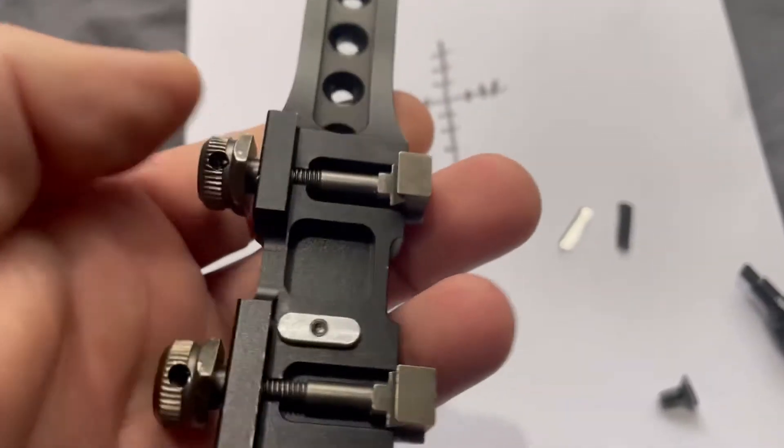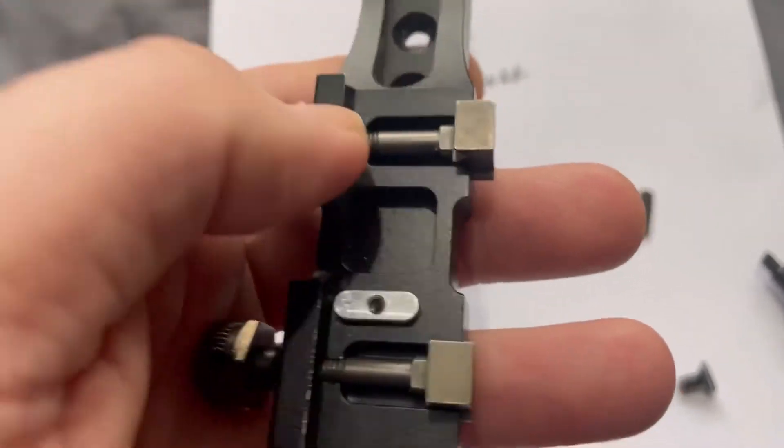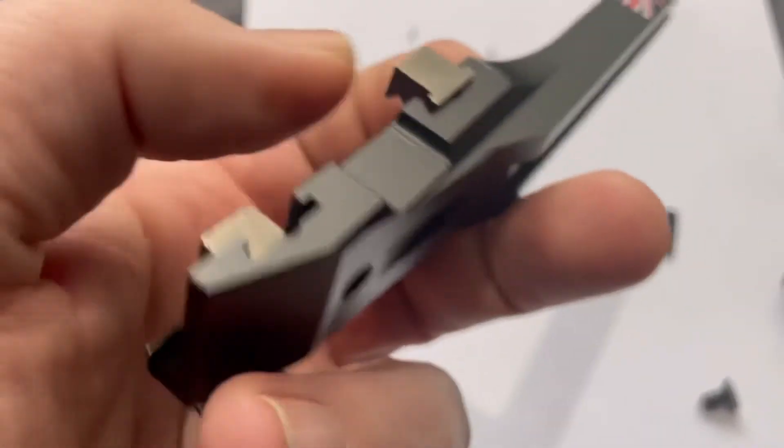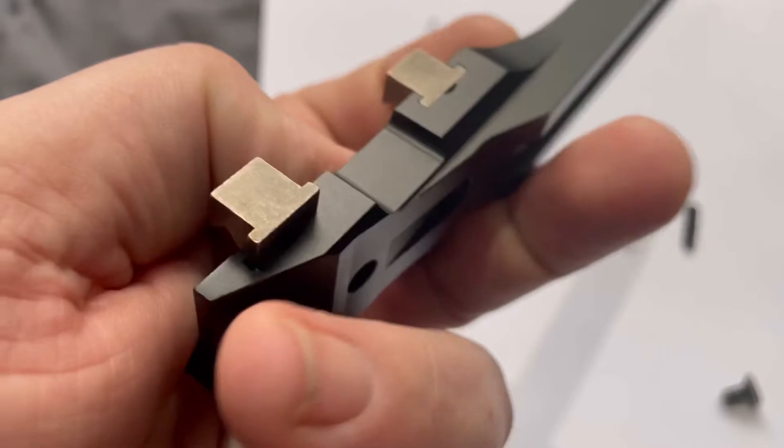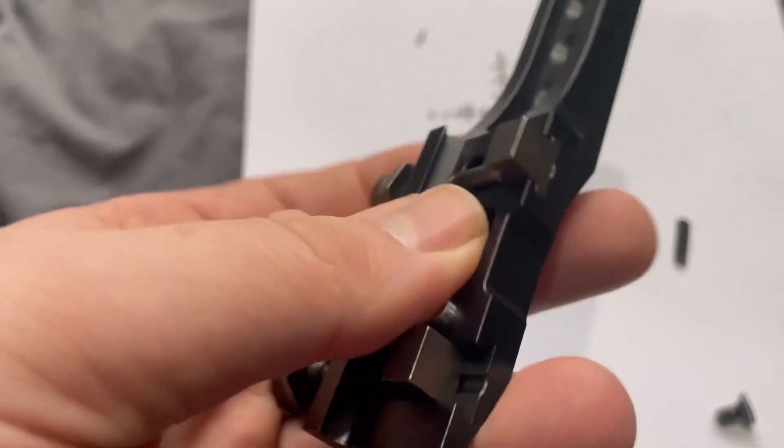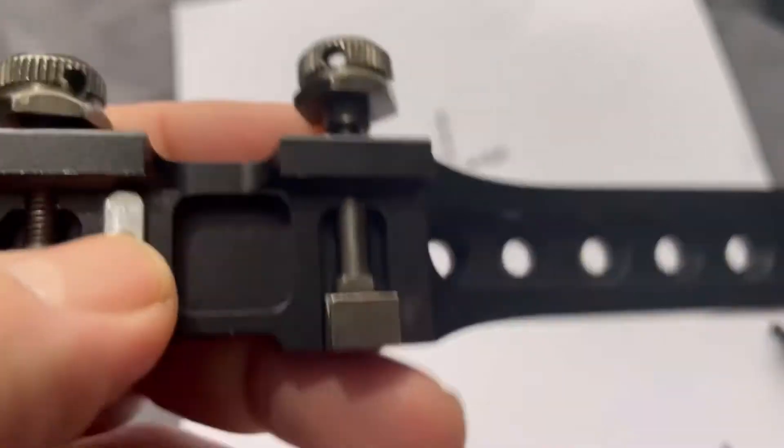Right, now the left and right adjustment. Now you shim the fixed side of the bracket. Okay? Don't shim this side, there's absolutely no point in shimming this side because all you're going to do is lengthen or shorten the pull. You shim this side, the fixed side.